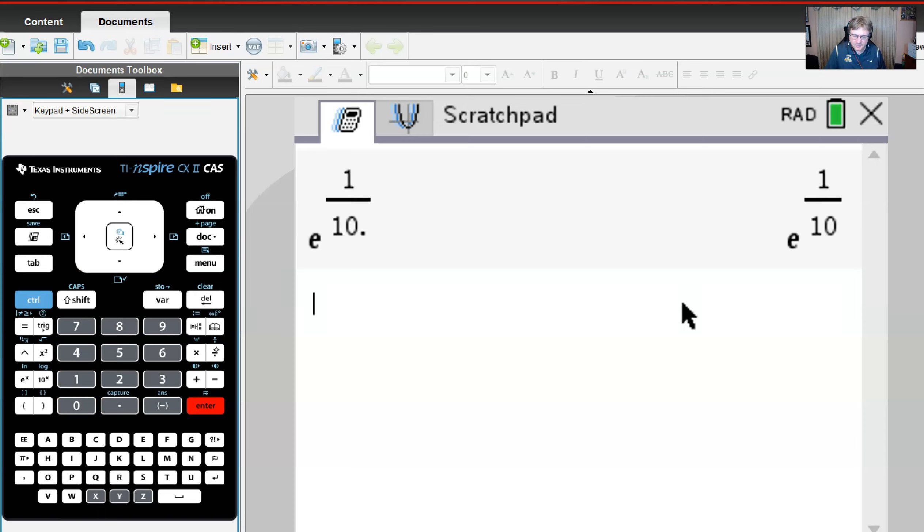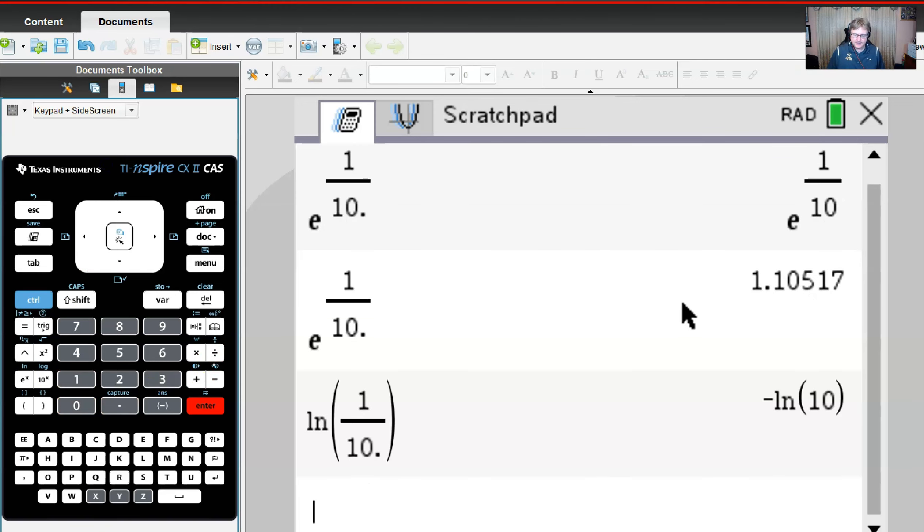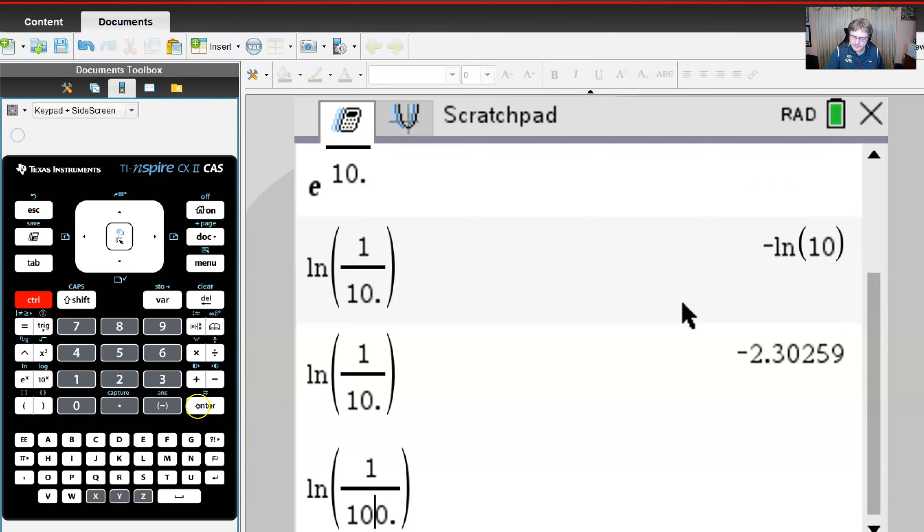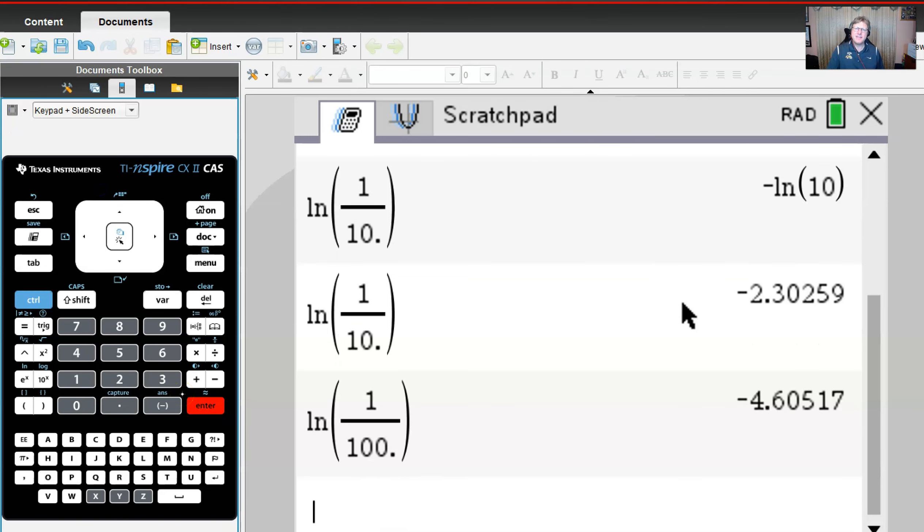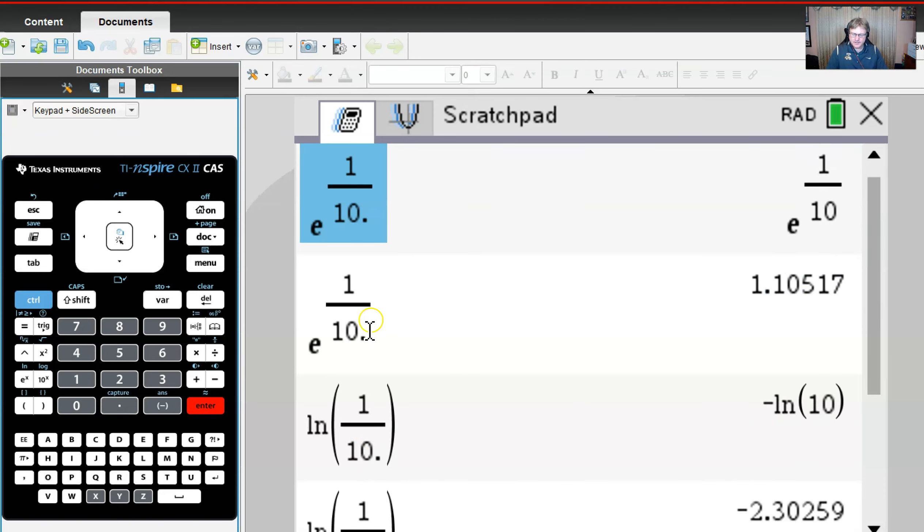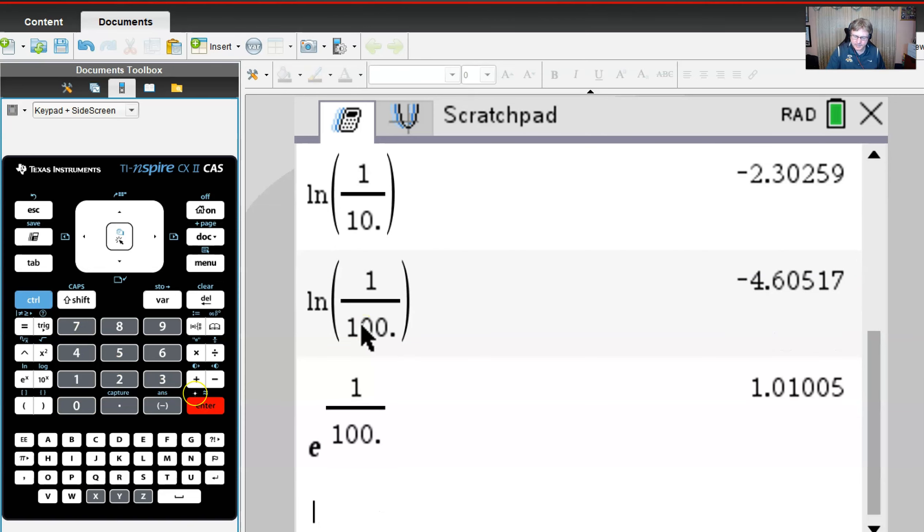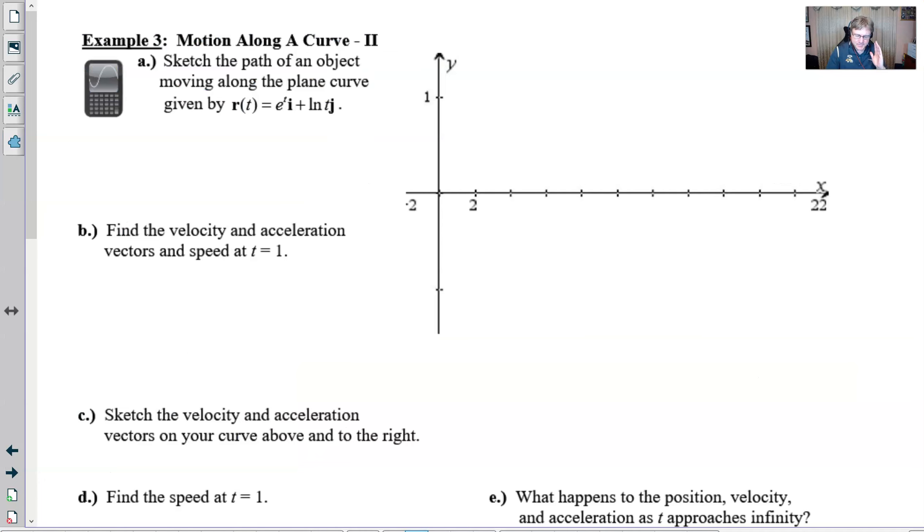Let's try that. If we let t be one tenth, this would be our x value. Let's convert it to a decimal, we're getting a value that's positive and bigger than one. But our natural log is going to be negative 2.3, so we're actually going to be getting smaller and smaller. Let's play around with this, one over a hundred.